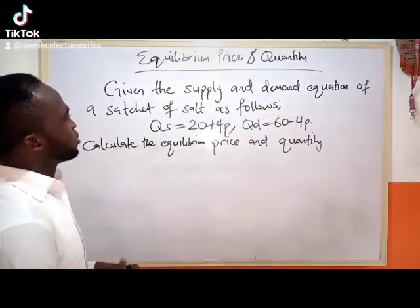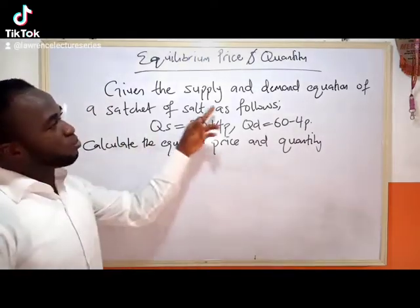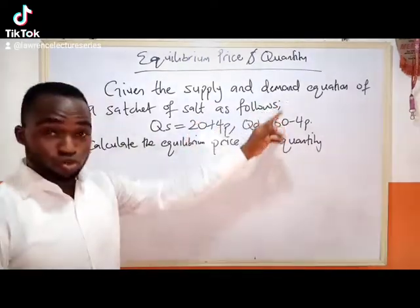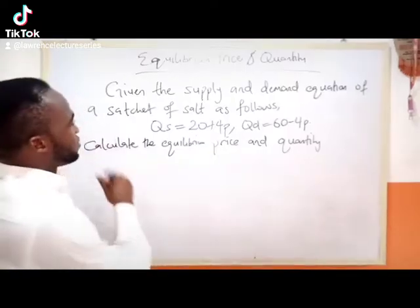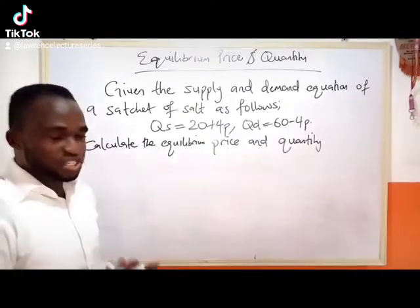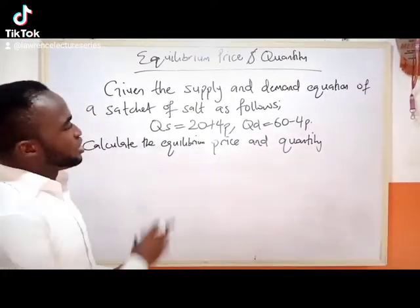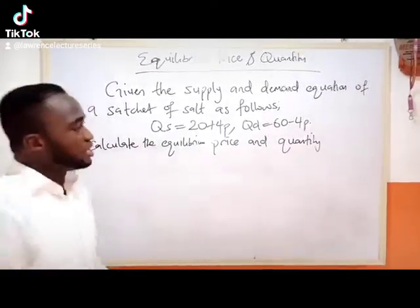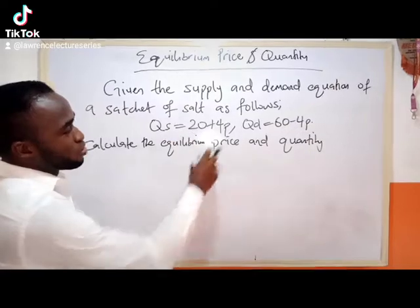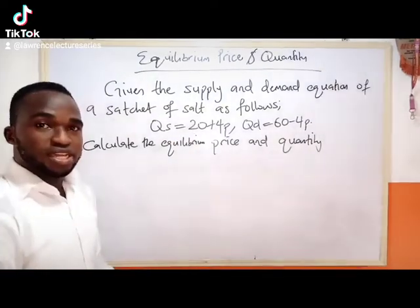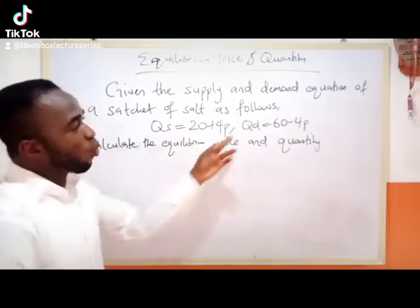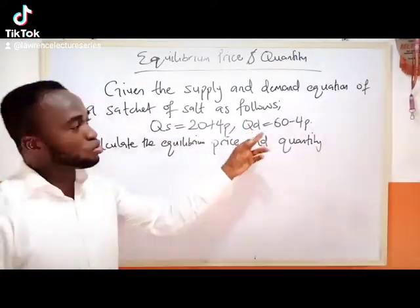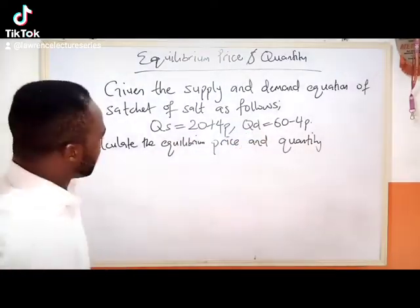The question says: given the supply and demand equation of a subject of salt as follows. Qs, which is quantity supplied, equals 20 plus 4p. Qd, which is quantity demanded, equals 60 minus 4p.